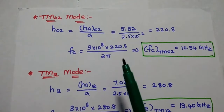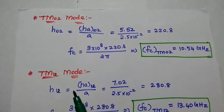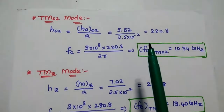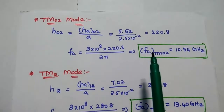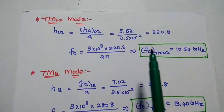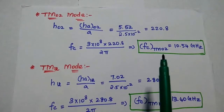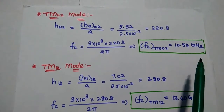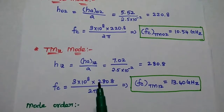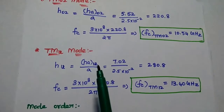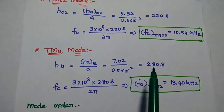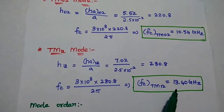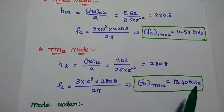Similarly, we can find out the values for TM02 and TM12 modes. For TM02, H'_02 = 5.52, giving H02 = 220.8. Substituting that value, the cutoff frequency for TM02 is 10.54 GHz. For TM12 mode, H'_12 = 7.02, giving H12 = 280.8. Substituting this in the cutoff frequency formula gives 13.40 GHz.